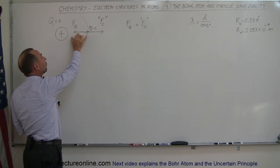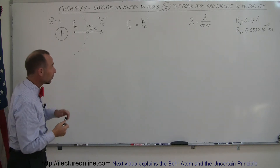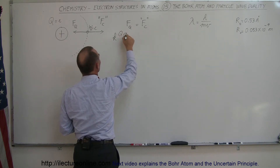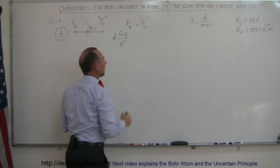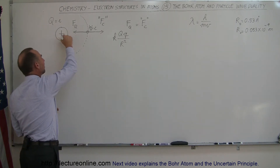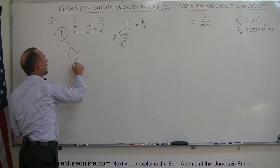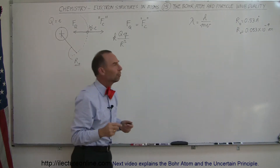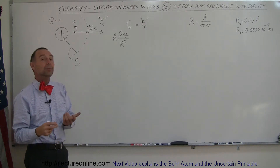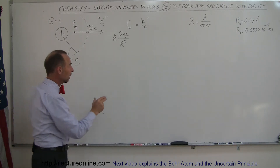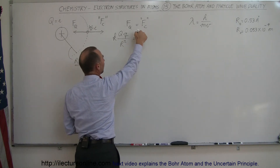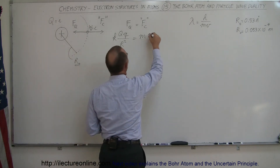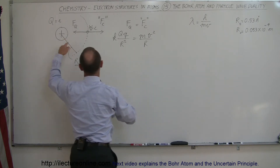The centripetal force is the Coulomb force and we set them equal to each other. The Coulomb force from Coulomb's law is k times the charge of the proton times the charge of the electron, divided by the radius between them squared. The radius here is the Bohr radius — the size of the hydrogen atom. The Bohr radius has a value of 0.53 angstroms or 0.053 nanometers, which is 10 to the minus 9 meters. We set that equal to the centripetal force, which is the mass of the electron times v squared over r, where r is the same Bohr radius.